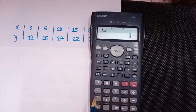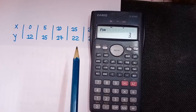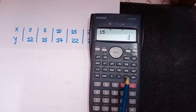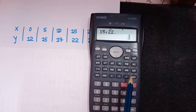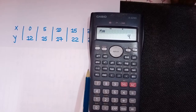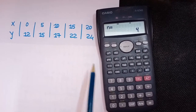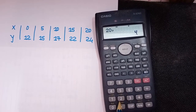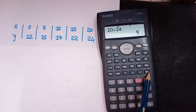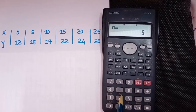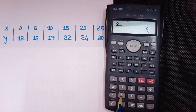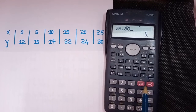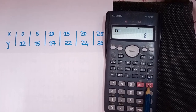Don't press any other keys, otherwise you'll get a syntax error. The fourth values are X=15 and Y=22, so press 15 comma 22. Our next value is 20 comma 24 — press M+. The last value is 25 comma 30 — press M+. Then press AC.